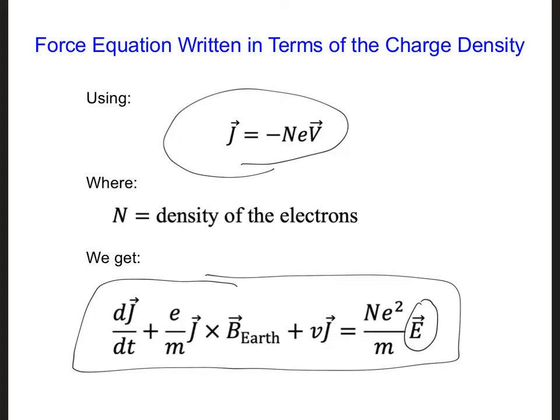But from Maxwell's equations, and specifically Ampere's law, J, this current density, shows up in Ampere's law, meaning that the flow of electrons in the ionosphere impacts the propagation of our electromagnetic wave.